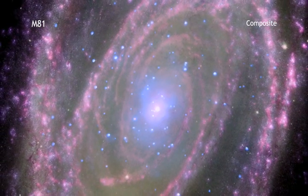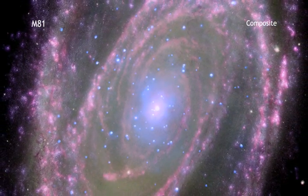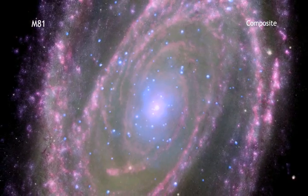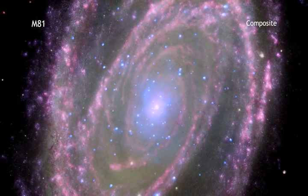This image of the mammoth spiral galaxy M81, located about 12 million light-years away, contains data from four different NASA satellites.